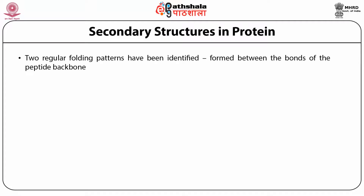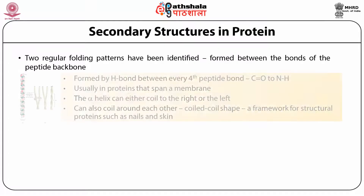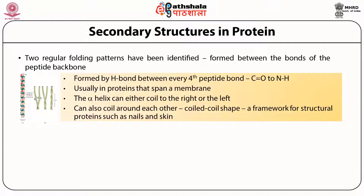Two regular patterns have been identified from the peptide backbone bonds. The first is the alpha helical conformation, formed by hydrogen bonds between every fourth peptide bond, between C=O and N-H groups. In proteins that span membranes, alpha helices can coil left or right, coil around each other, and form a framework in structural proteins such as nail and skin.